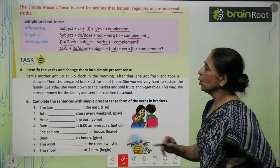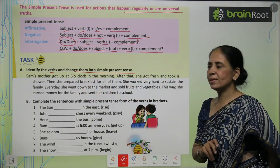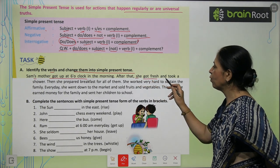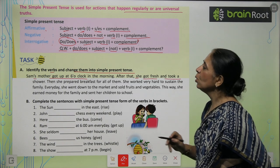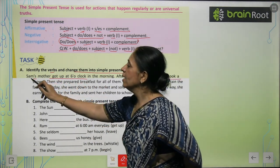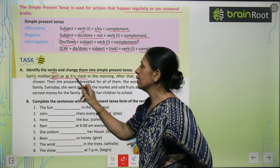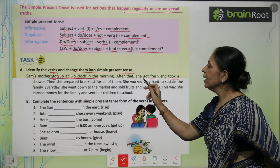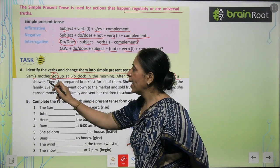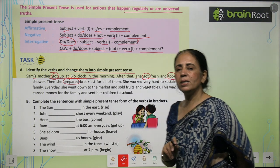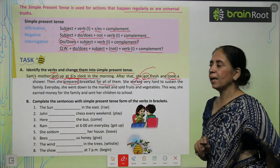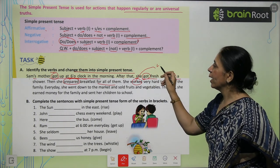Now let's do this exercise. You have to identify the verbs and change them into present tense sentences. 'Sam's mother got up at 6 o'clock in the morning. After that she got fresh and took a shower.' We have to convert this into simple present tense, as it describes Sam's mother's routine habits.